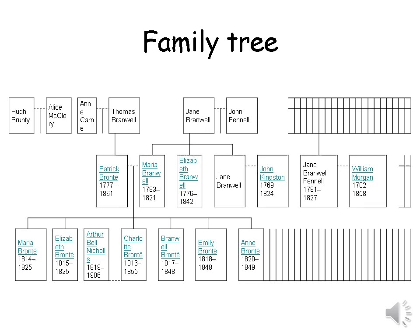I've taken this from the internet to show you the family tree. The parents were called Patrick and Maria, and they had six children: Anne, Emily, Branwell, Charlotte, Elizabeth, and Maria. Arthur Bell Nicholls is the husband of Charlotte.